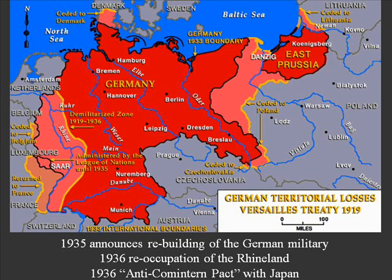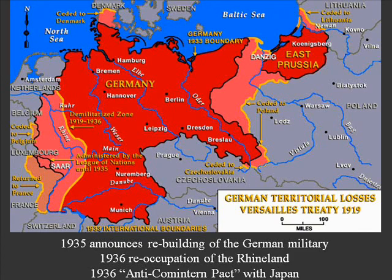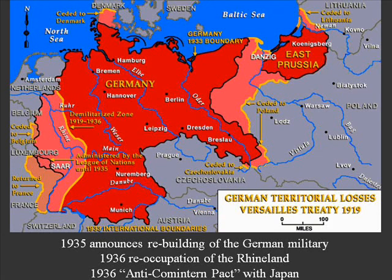Very quickly after Hitler took control — the former president died in August 1934 — in 1935 he announced the rebuilding of the German military beyond the limits imposed by the Versailles Treaty. He declared Germany would not sit with just a half-million man army. This was also a key part of his economic program: take all the unemployed men hit by the Great Depression, put them in the army. Two birds with one stone — more employment and a stronger army.